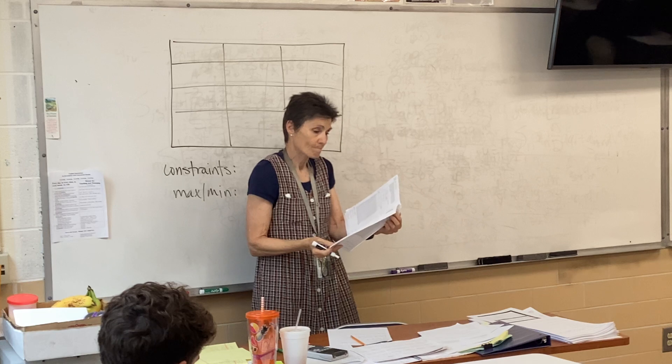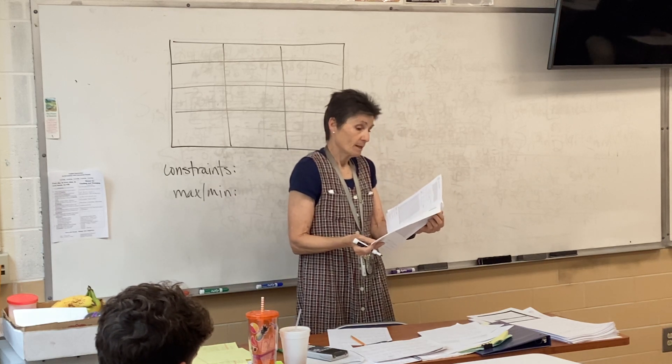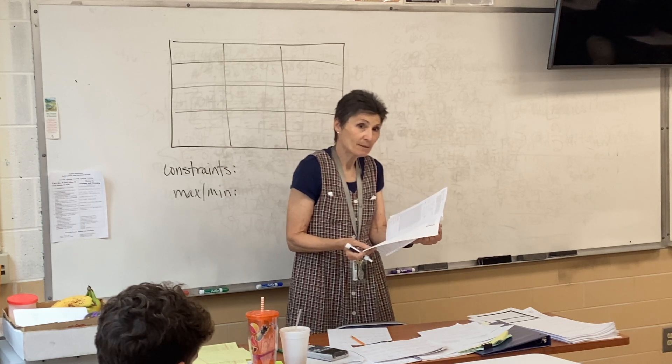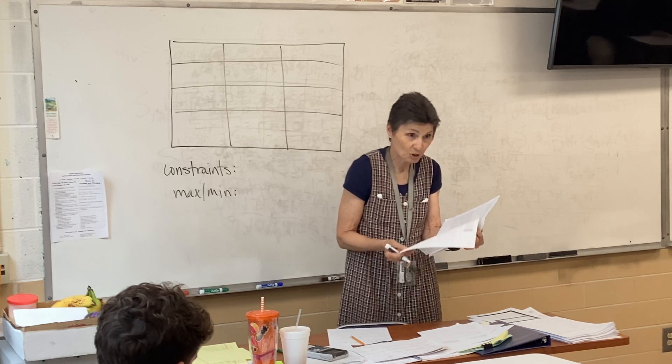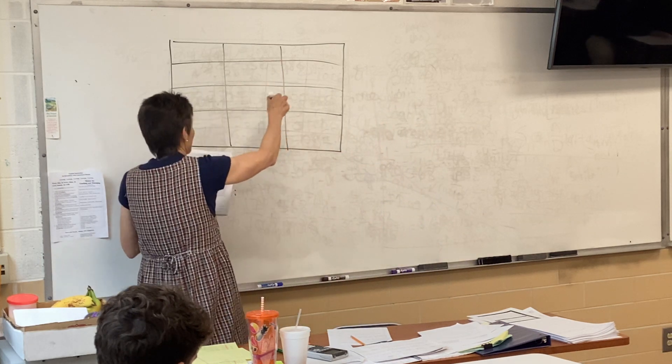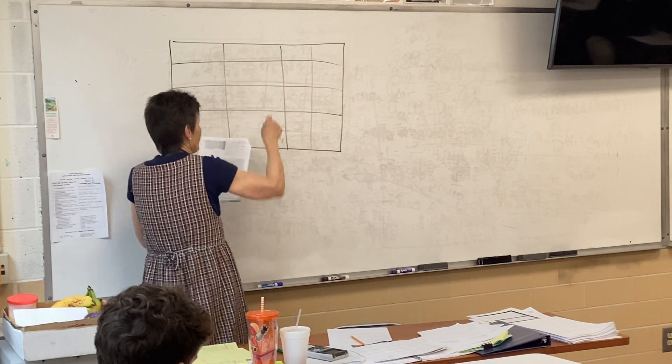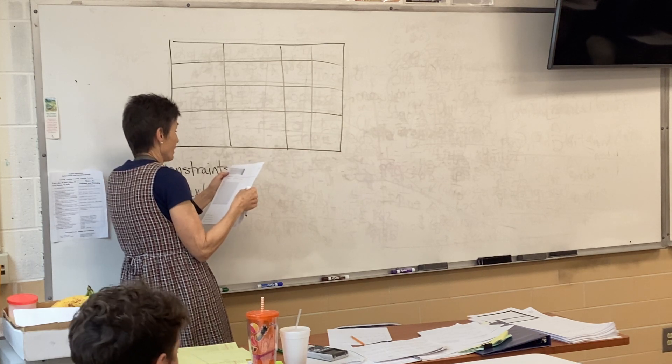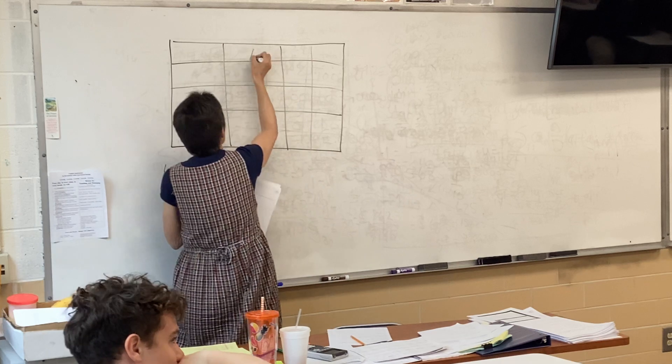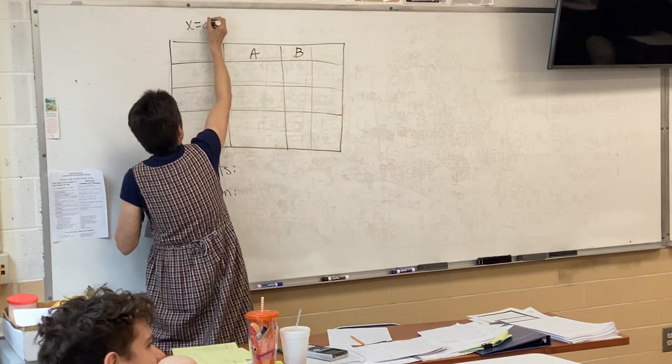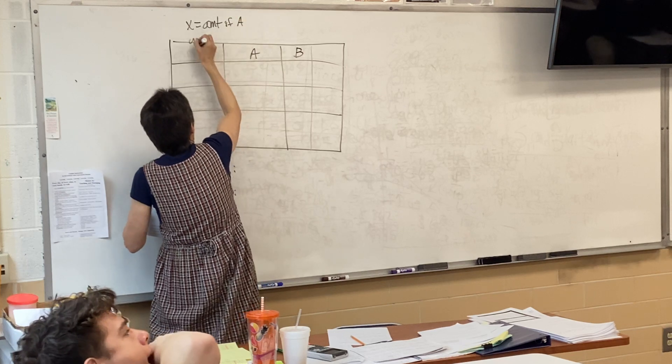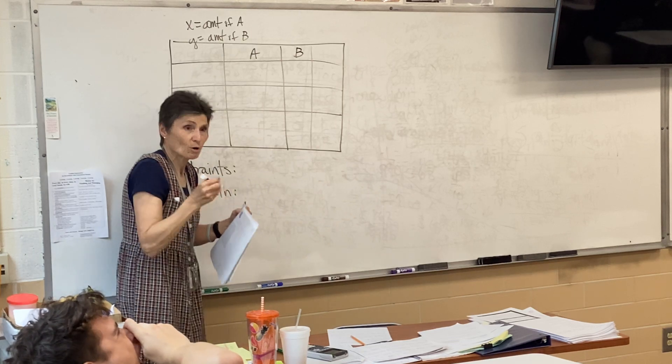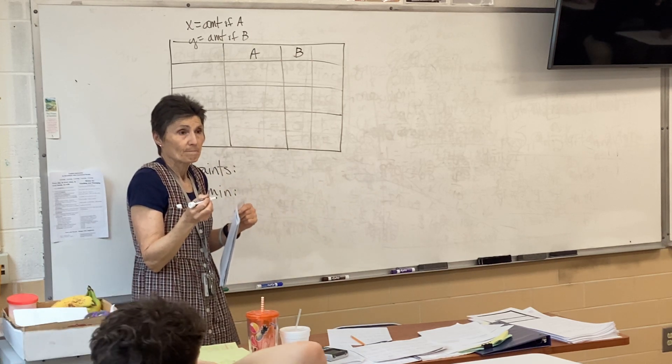Problem number two that we did the other day. A and B are at the top of the chart, and A and B are the question. How much A, how much B should I buy? So, what do you think we ought to put up here? I think I might need one more. What do you think we ought to put up here at the top of our chart? How much of each food substance? So, what are the food substances? A and B. So, X is going to be the amount of A, and Y is going to be the amount of B. Isn't that the question? That's what I'm trying to figure out.